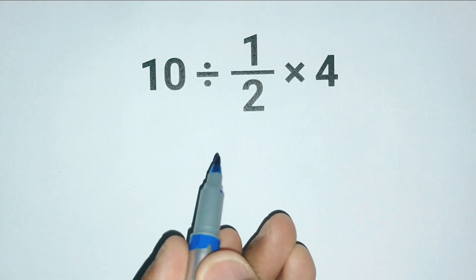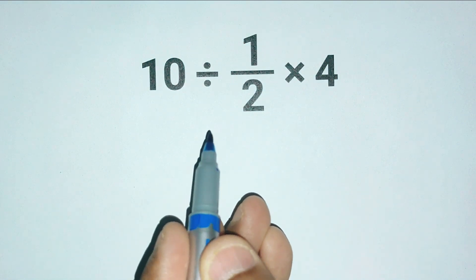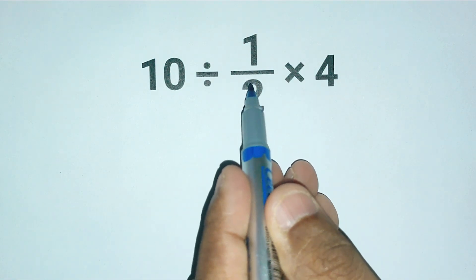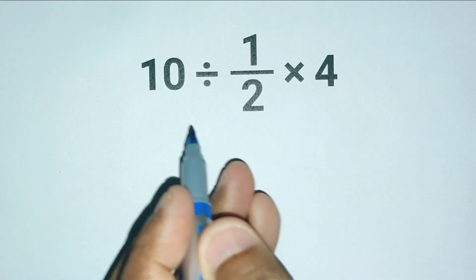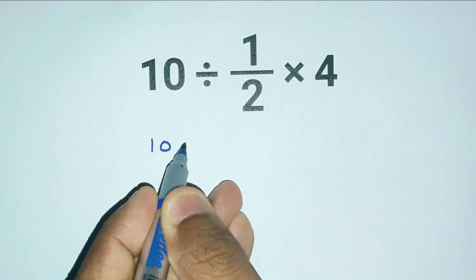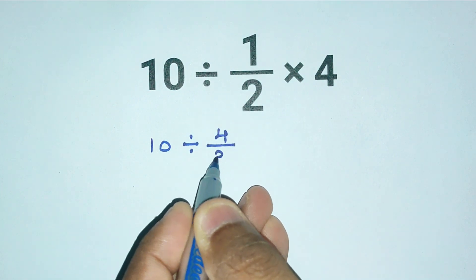When they see 10 divided by 1 over 2 times 4, they quickly try to simplify the 1 over 2 times 4 part first. They think 1 over 2 times 4 equals 4 divided by 2, so now we have 10 divided by this result.